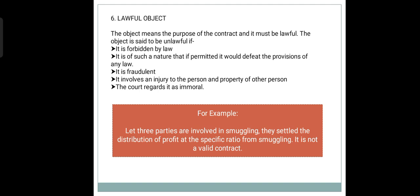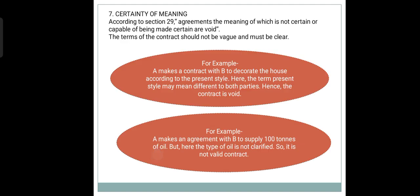For example, if three parties are involved in smuggling and they settle the distribution of profit at a specific ratio from smuggling, it is not a valid contract because the object is not valid in the eyes of law.